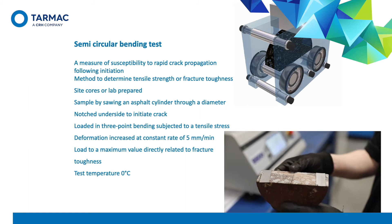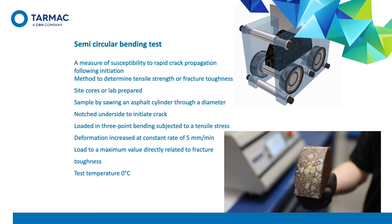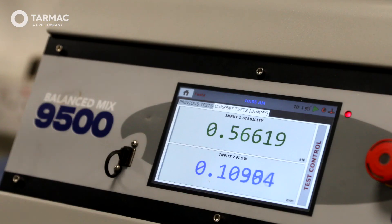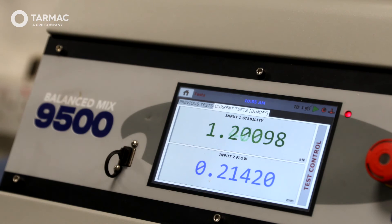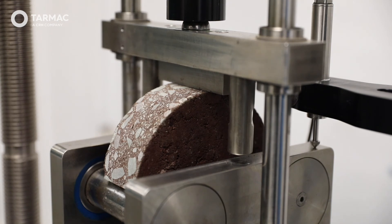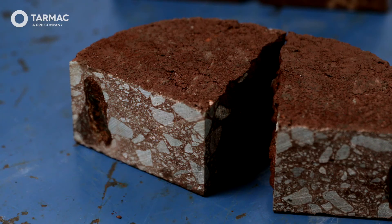The semicircular bending test is principally for local authority roads, which are thinner and subject to more movement due to variable foundations. A half-cylinder test piece has a small cut made into its flat side to initiate a crack into the specimen. This ensures that when a load is applied, the crack appears in a controlled manner. The specimen is then subjected to a controlled rate of deformation in a three-point bending configuration. A load is applied to achieve a deformation of five millimetres per minute, and the test is generally carried out at zero degrees centigrade.